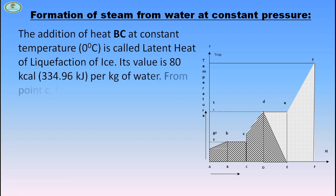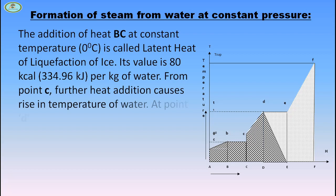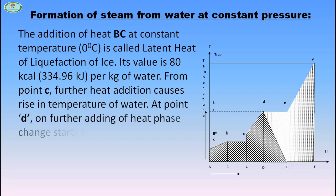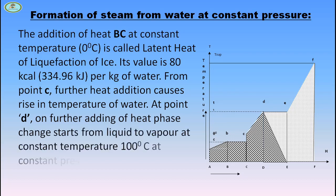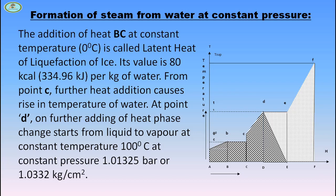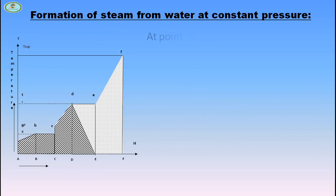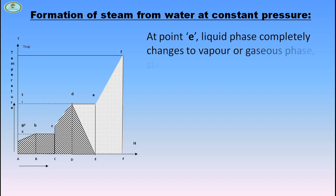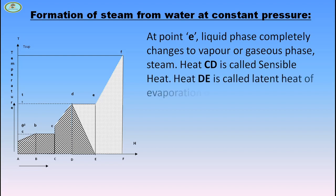The addition of heat from point B to C at constant temperature is called the latent heat of liquefaction of ice. Its value is 80 kilocalorie per kg of water. From point C, further heat addition causes a rise in temperature of water. At point D, on further addition of heat, phase change starts from liquid to vapor at constant temperature of 100 degrees Celsius and constant pressure of 1.01325 bar. At point E, the liquid phase completely changes to vapor or gaseous phase — steam. Heat from C to D is called sensible heat, and heat from D to E is called latent heat of evaporation.